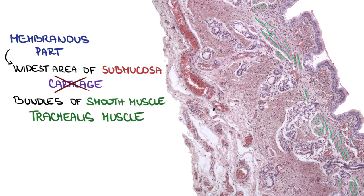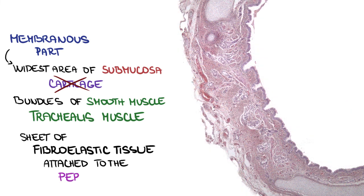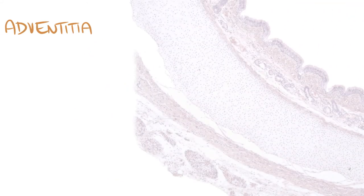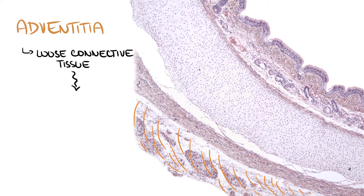There is also a sheet of fibroelastic tissue attached to the perichondrium of the cartilage, but we cannot see that very clearly here. There are many seromucous glands in this area. Adventitia comprises loose connective tissue, which is continuous with connective tissue in the mediastinum.